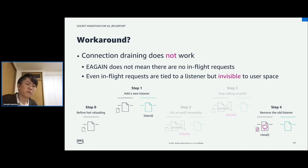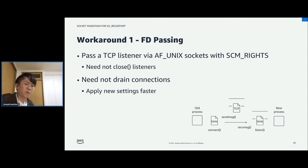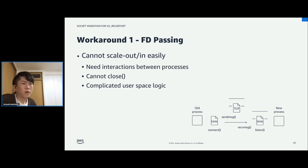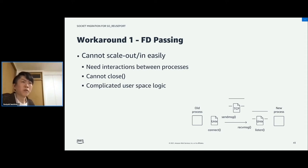There are two major workarounds for this issue. The first one is fd-passing: we can pass file descriptors to listeners through a Unix domain socket with the SCM_RIGHTS type of message. In this case, we need not close listeners, so the problem does not happen. Also, this approach does not need connection draining so we can apply new server settings faster. But it has a downside: with fd-passing, it is not easy to scale out or scale in servers. One of the merits of SO_REUSEPORT is that each process can work independently, meaning new listeners need not interact with the old process to listen on the same port.